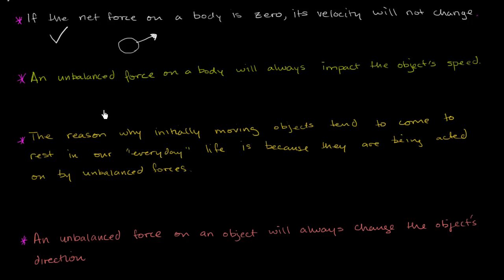Statement number two: an unbalanced force on a body will always impact the object's speed. The key word here is 'speed.' If I had written 'impact the object's velocity,' then this would be a true statement — an unbalanced force on a body will always impact the object's velocity. But we wrote 'speed.' Speed is the magnitude of velocity; it does not take into account the direction.